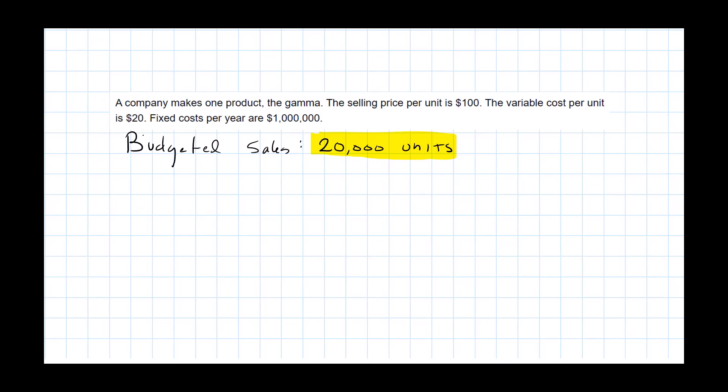We see the company makes a single product called the Gamma and their selling price is $100. The variable cost per unit is $20 and they have fixed cost per year of $1,000,000.